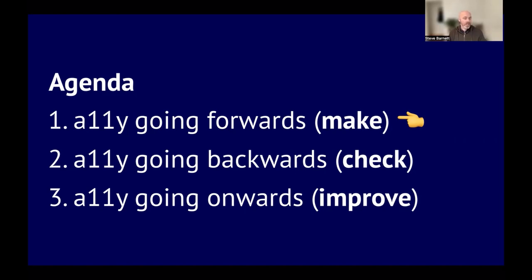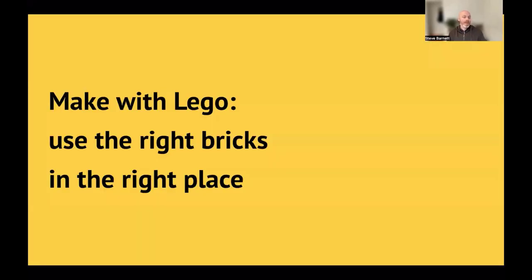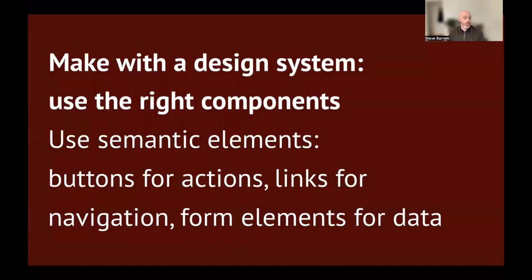Chapter one: Accessibility going forwards — Make. When we're making with Lego, it's mostly about using the right bricks in the right place. When we're making with a design system, it's about using the right components — semantic elements. If something performs an action, we probably want a button. If it's for navigation, we want a link. If we're collecting data, we want form elements. There's a little wobble: things like radios and checkboxes can be used to perform actions in the UI, but we want to be careful, because buttons really are for performing actions and form elements really are for collecting data.